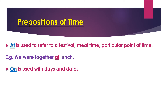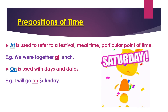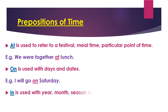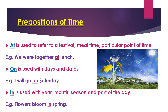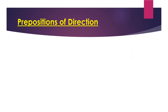'On' is used with days and dates. For example, 'I will go on Saturday' or 'I was born on 30th.' 'In' is used when talking about a year, month, season, or any part of the day. For example, 'I was born in 1980' or 'flowers bloom in spring.' If you want to talk about a particular month, again use 'in.'